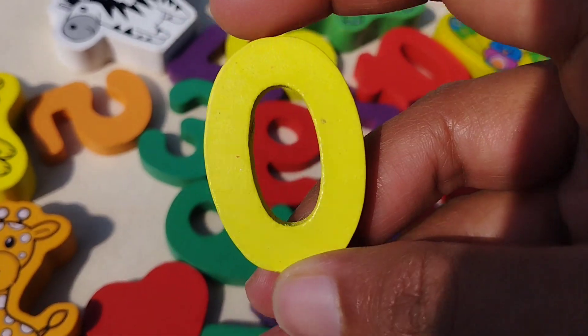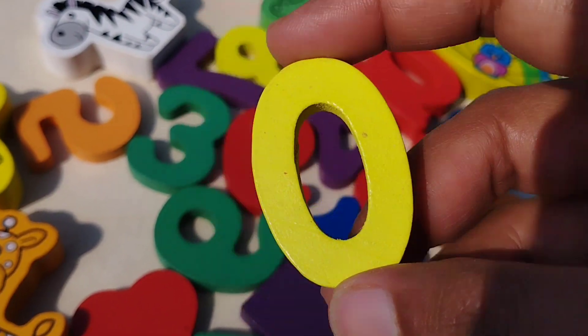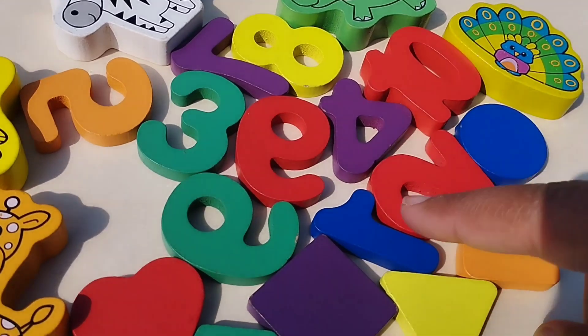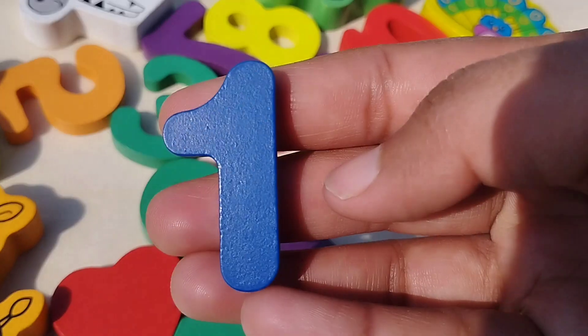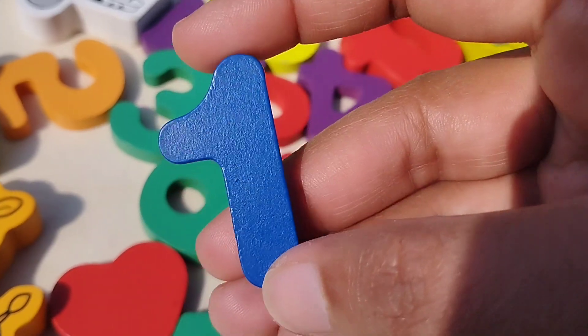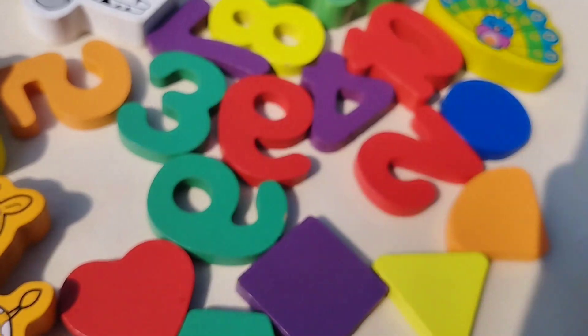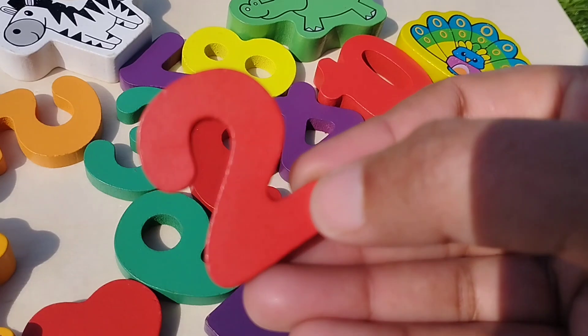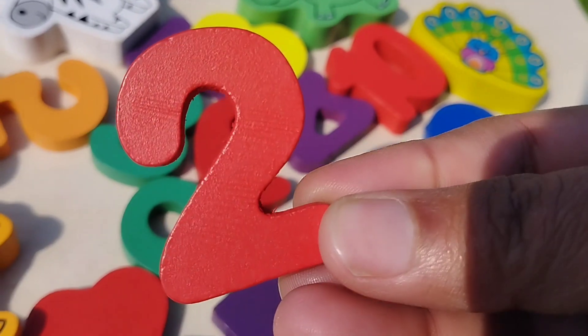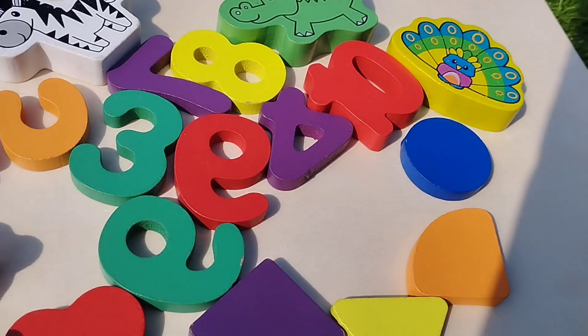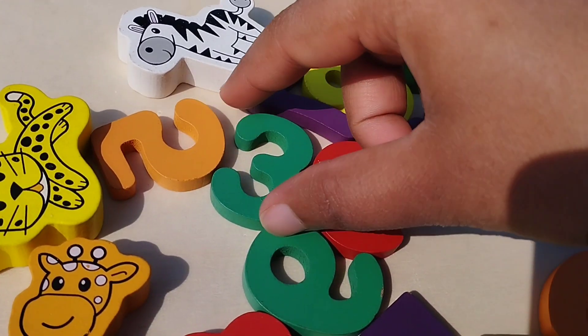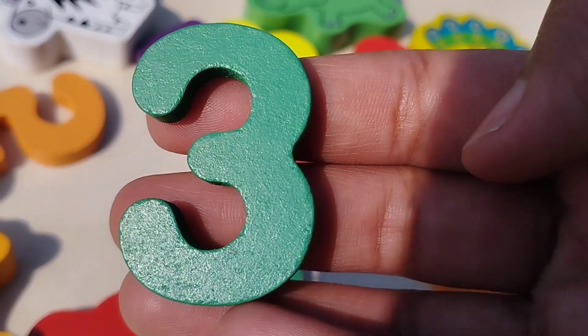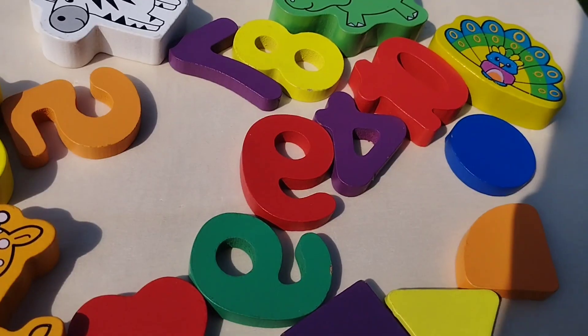The first number is number zero. This is number zero. One. Number one. The next number is number two. This is number two. The next number is number three. This is number three.